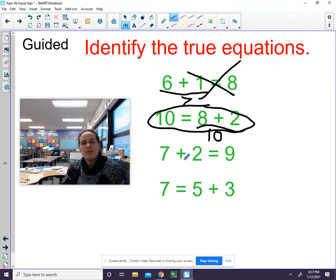Next one. Seven plus two equals nine. What part do you add? Go ahead. This is nine. Now decide, does nine equal nine? That's true.